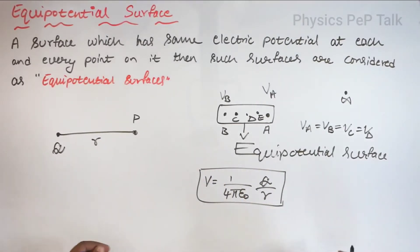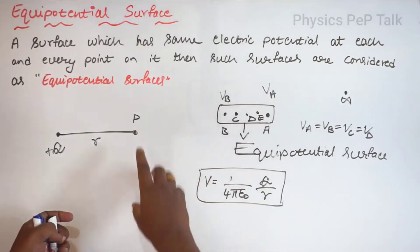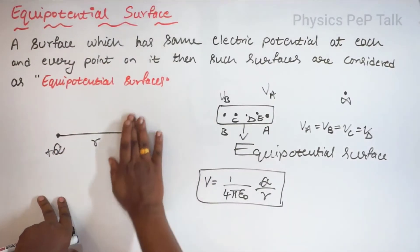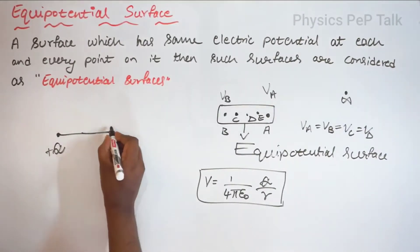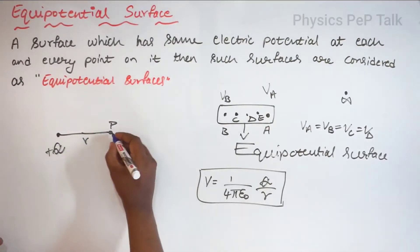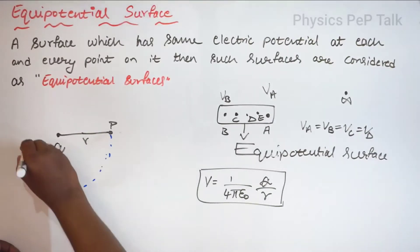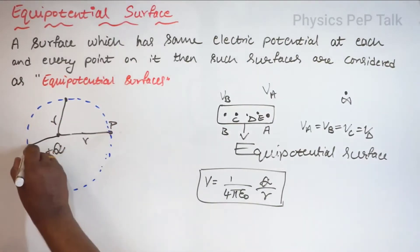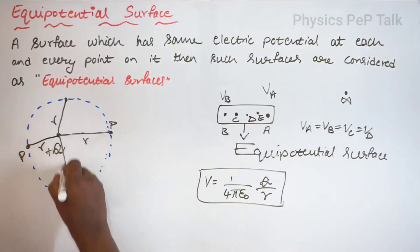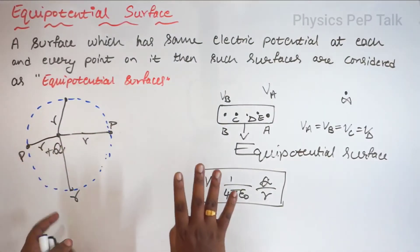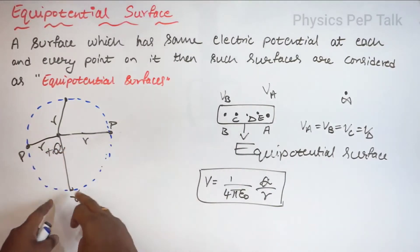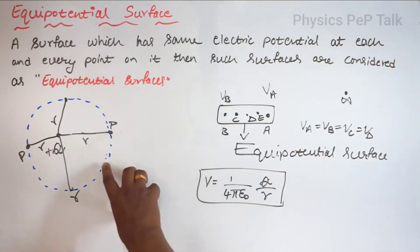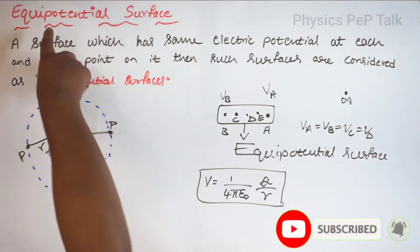Consider this positive charge. At point P, at the same distance R, the electric potential at that point will also be the same. I will consider an imaginary sphere such that if I consider point P at any location on the sphere, the distance R remains the same. This positive charge is the center of the sphere. I have considered an imaginary sphere where point P is at a distance R on the surface of the sphere. In this case, this imaginary sphere is nothing but an equipotential surface.